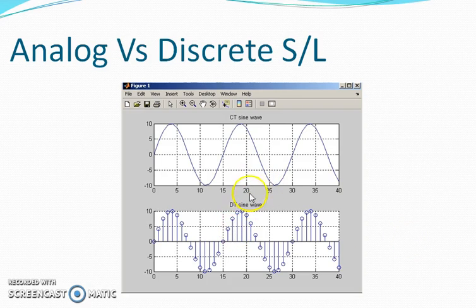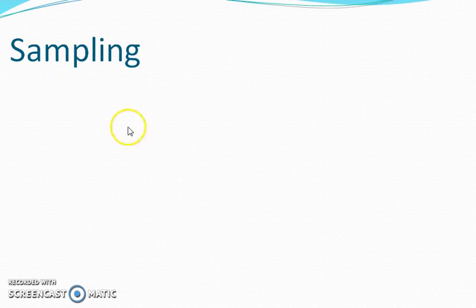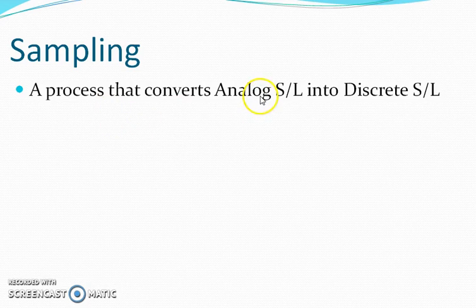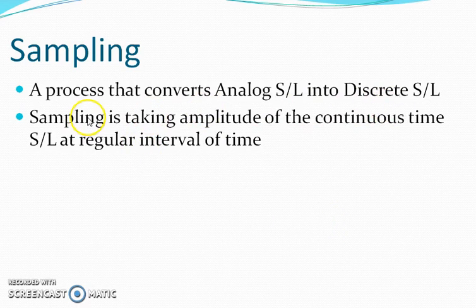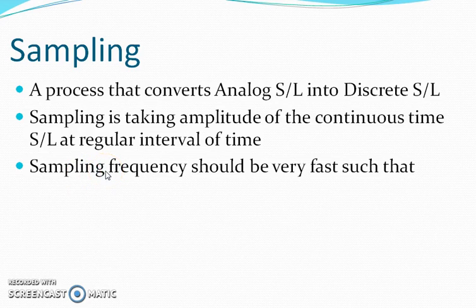How can we get a discrete time signal from an analog signal? By means of a process called sampling. Sampling is the process of converting an analog signal into a discrete time signal by taking the amplitude of the continuous time signal at regular intervals of time. If we require the original analog signal back from the discrete time signal, we need complete recovery without any loss of the original content. So sampling must be performed by obeying a certain condition — the sampling theorem.